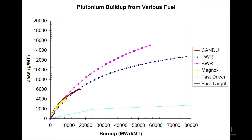In the case of Magnox and CANDU reactors, you typically cannot operate the fuel beyond about 10,000 to 20,000 megawatt-days per metric ton because there simply isn't enough U-235 in the fuel to keep it critical. PWR and BWR reactors, on the other hand, can operate to typically much higher burn-ups. That covers the basic types of nuclear reactors and some of the plutonium production you might see for those systems.